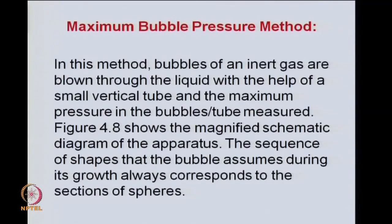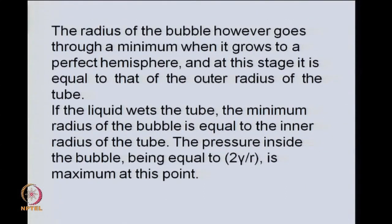If you take an inert gas and blow it through the liquid with the help of this small vertical tube and measure the pressure continuously, the initial sequence of shapes the bubble assumes during growth would correspond to sections of spheres. The radius of the bubble becomes minimum when it has grown into a perfect hemisphere. At this stage, the bubble radius equals the outer radius of the tube. If the liquid wets the tube, then the minimum radius of the bubble would be equal to the inner radius of the tube.